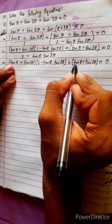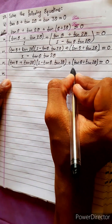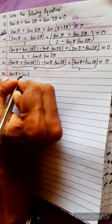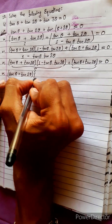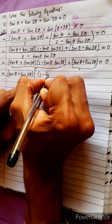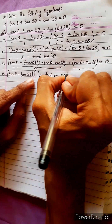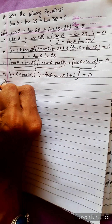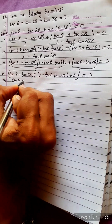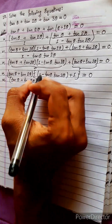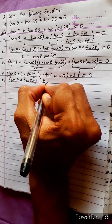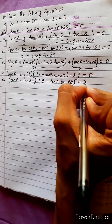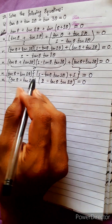Now, from this term and this term, take something common. The common will be tan θ plus tan 2θ. Take this as common, and the remaining term is: from here, 1 minus tan θ into tan 2θ, plus from here nothing is left, so only 1. That gives us: tan θ plus tan 2θ, times 1 plus 1 is 2, so 2 minus tan θ · tan 2θ, equals to zero.